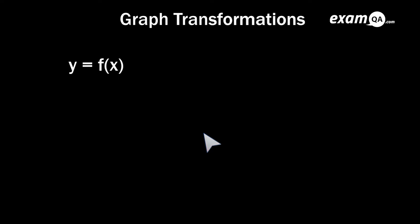In this video we're going to be looking at graph transformations. You might have seen this written in many questions: y equals f(x). All that means is a general form for any graph. For example, f(x) could be 2x, it could be a quadratic like x squared plus 3x plus 5, or many other things. We're just generally talking about all types of graph, y equals f(x), a function of x.